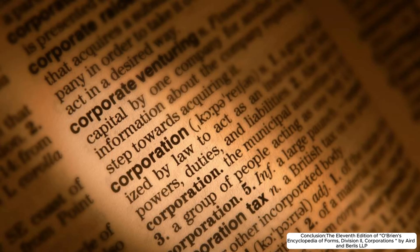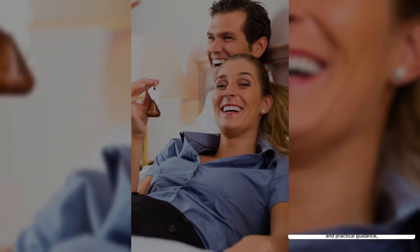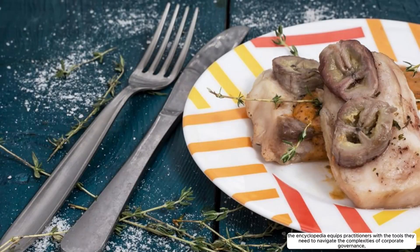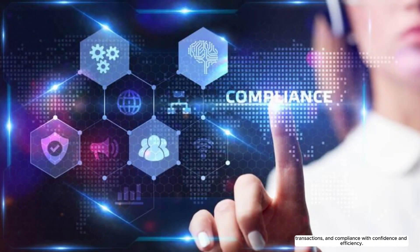In conclusion, the 11th edition of A Bryan S. Encyclopedia of Forms, Division II: Corporations by Aird and Burley's LLP serves as an indispensable resource for legal professionals practicing in the field of corporate law. With its comprehensive collection of forms, precedents, and practical guidance, the encyclopedia equips practitioners with the tools they need to navigate the complexities of corporate governance, transactions, and compliance with confidence and efficiency.